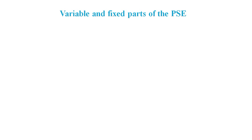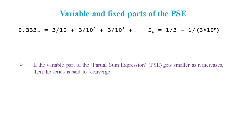Let's have a look at the variable and fixed parts of the partial sum expression. Here we've got 0.3 recurring, which is 3/10 plus 3/100 and so on. Now the sum to the nth term is given by the expression 1/3 minus 1/(3×10^n). If the variable part of the partial sum expression gets smaller as n increases, then the series is said to converge. And in this case it does.